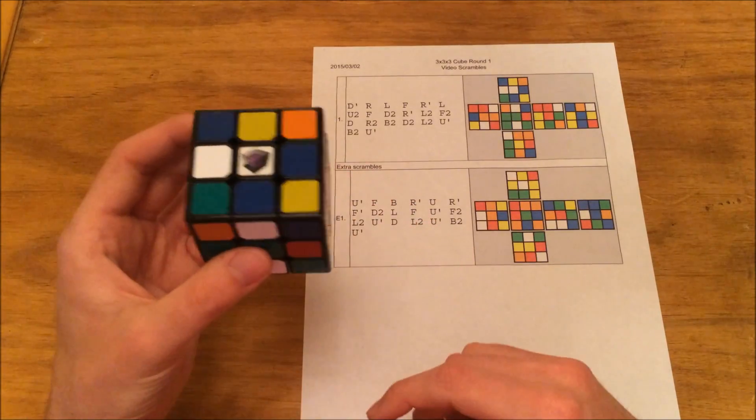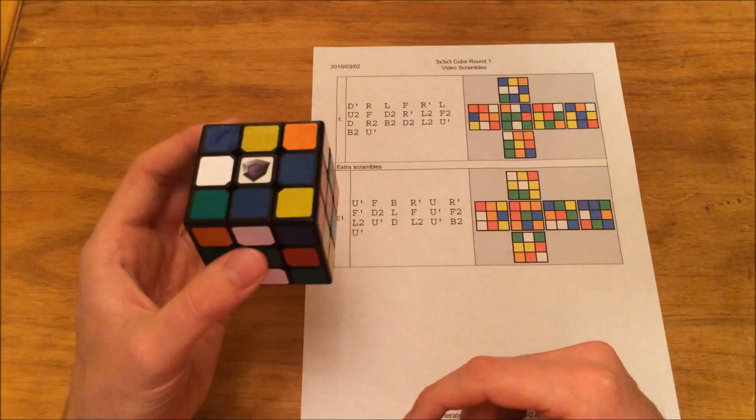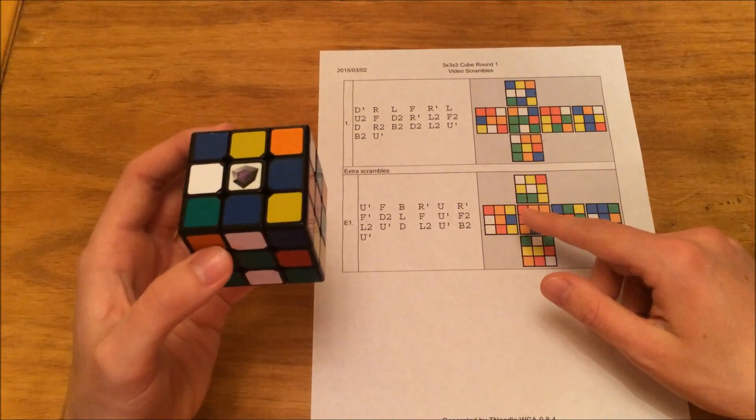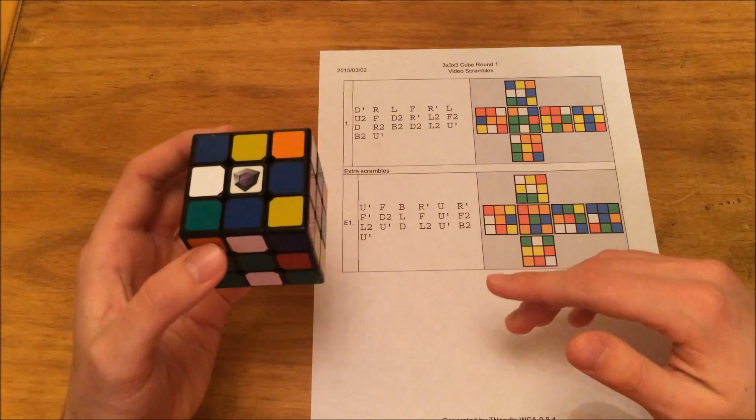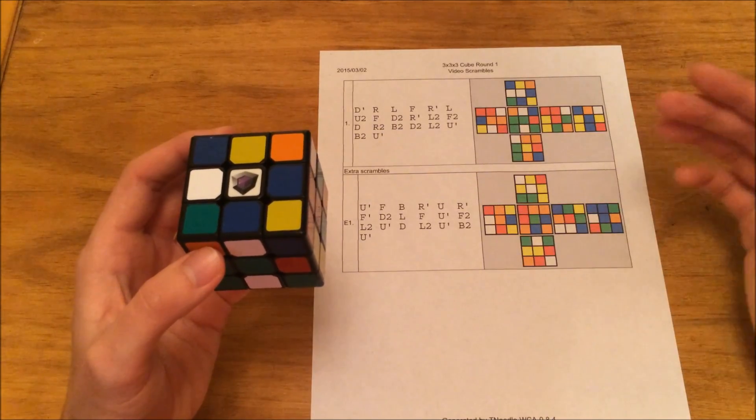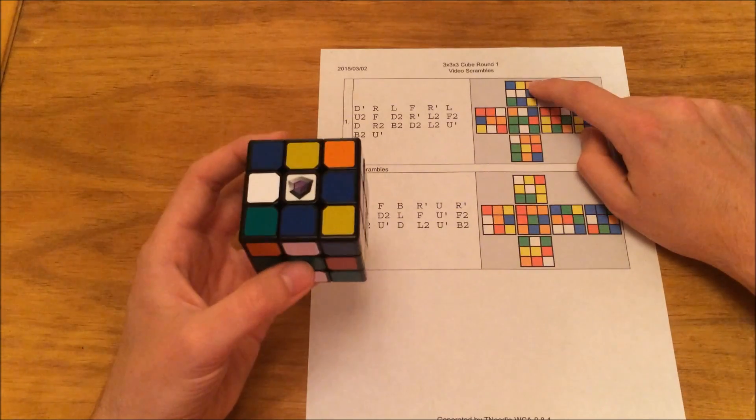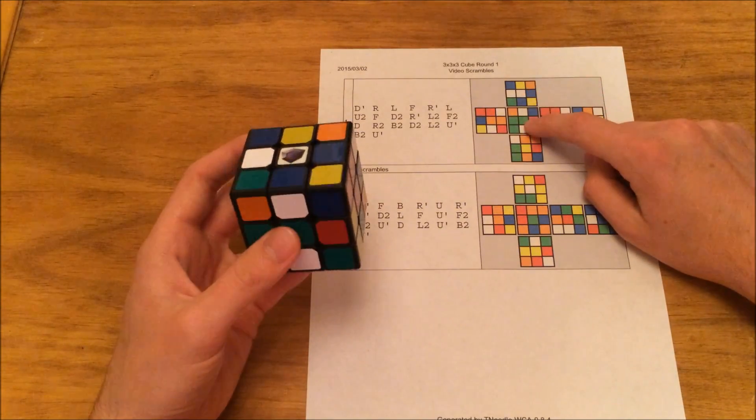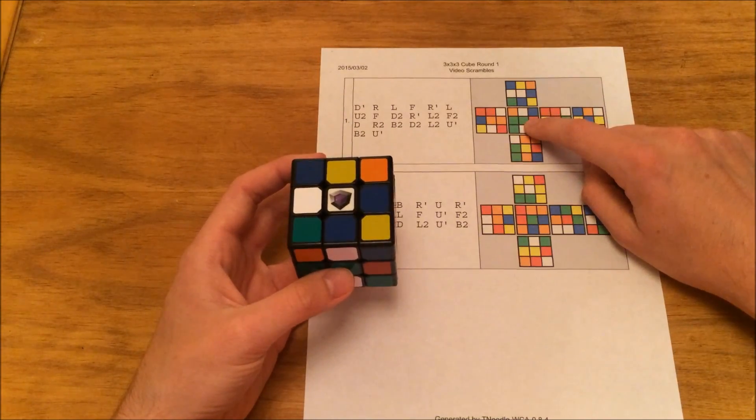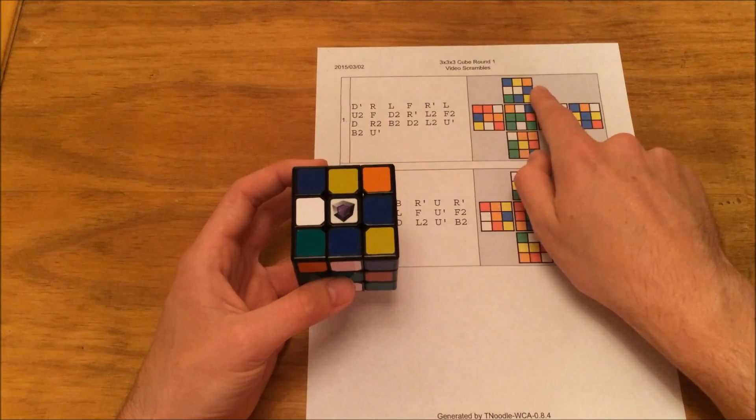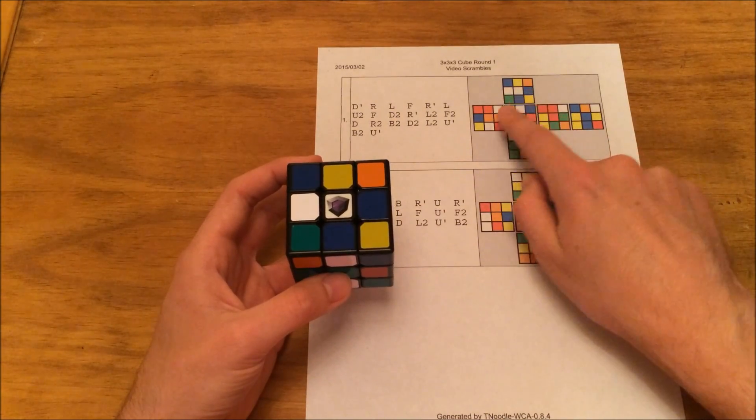And once you've applied your scramble, then it's time to check it against the pictures that are generated here. And this is very important if you are scrambling in a competition. You can't just scramble it and send it off. You actually have to check it. So on a 3x3, your white face is going to be the top square and your green face is going to be the middle square. So we'll check it here. And you'll notice on my cube, we have blue, yellow, orange. We have blue, yellow, orange. White, white, blue, which matches up.